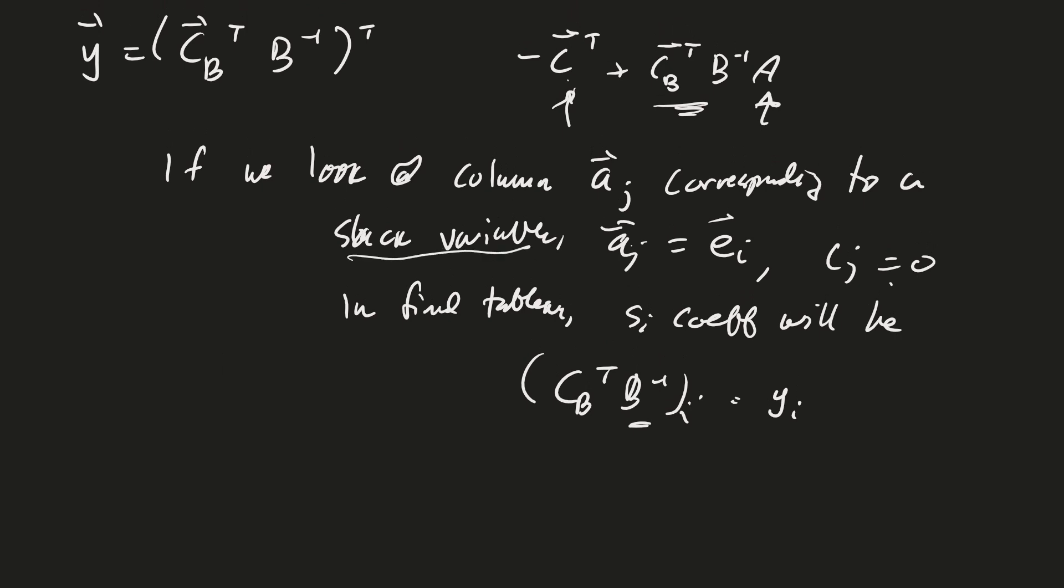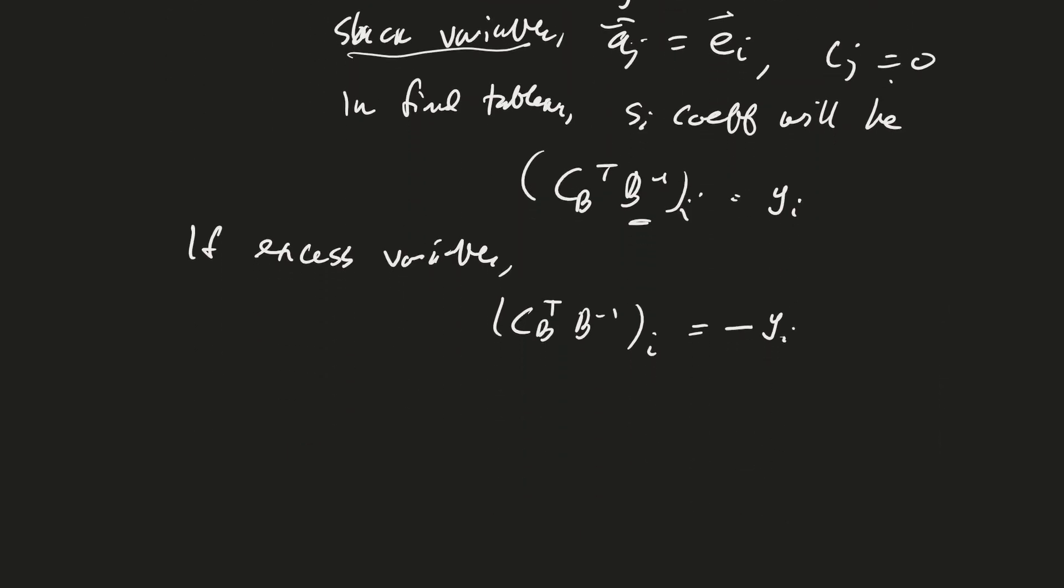You may not have a slack variable. Instead, you may have, if you have an excess variable, we'll have to take our c_B transpose B inverse, whichever coefficient we're looking at, we'll have to multiply that by minus one. And then similarly, we could even do this for an artificial variable. What happens in an artificial variable? Subtract M to get a y_i. And so we're going to try this in the next video. I'll see you then.